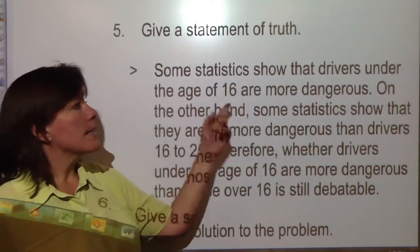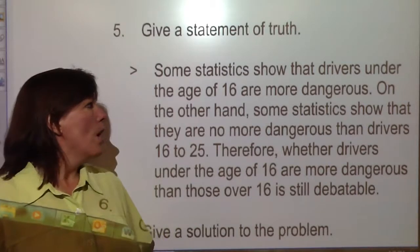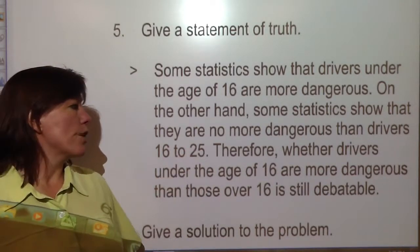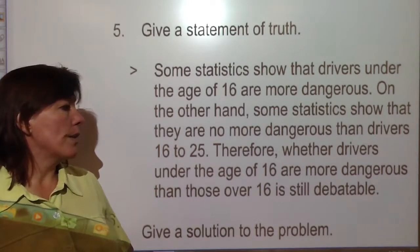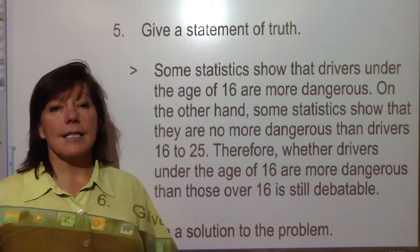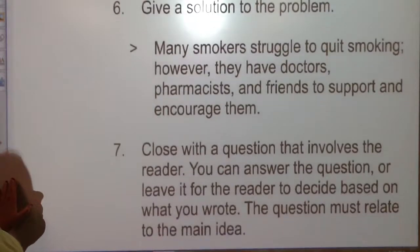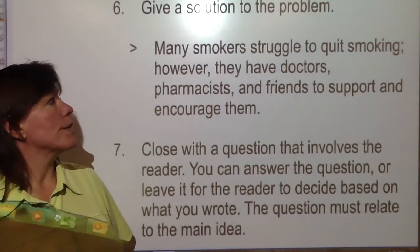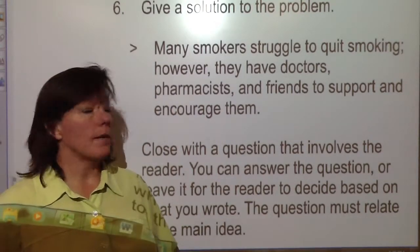You can give a statement of truth. 'Some statistics show that drivers under the age of 16 are more dangerous. On the other hand, some statistics show that they are no more dangerous than drivers 16 to 25. Therefore, whether drivers under the age of 16 are more dangerous than those over 16 is still debatable.' You can also give a solution to the problem: 'Many smokers struggle to quit smoking. However, they have doctors, pharmacists, and friends to support and encourage them.'